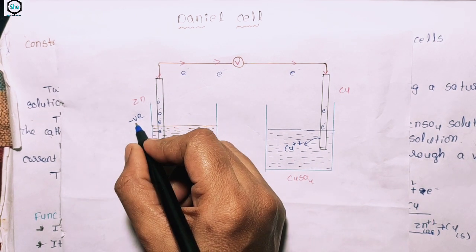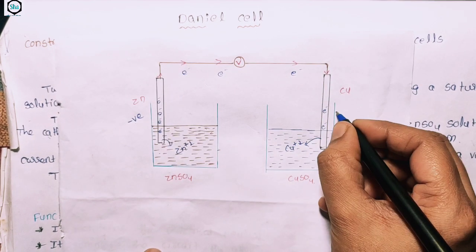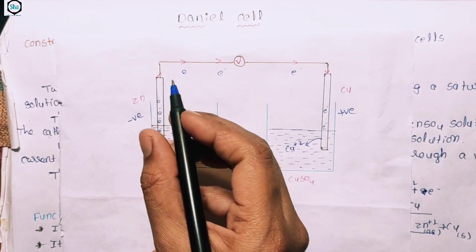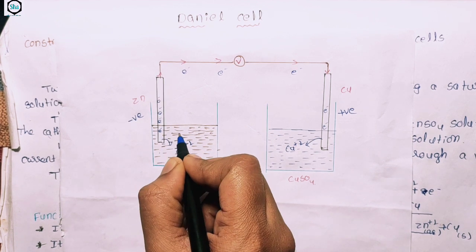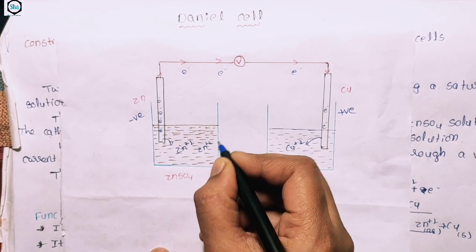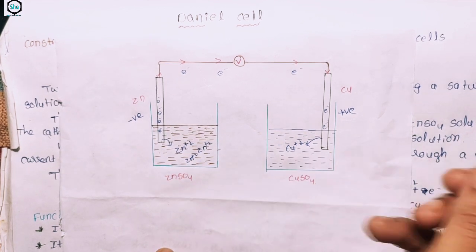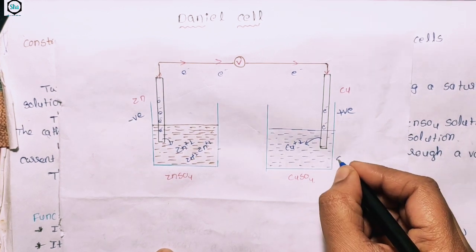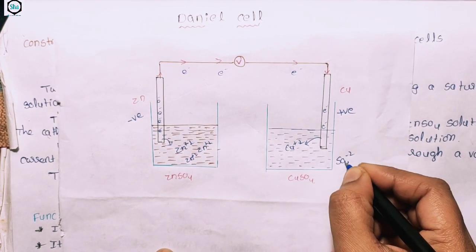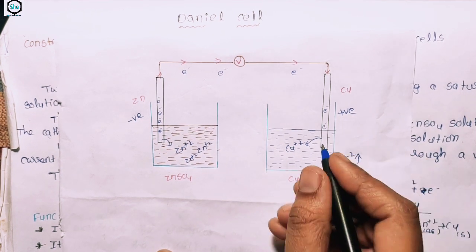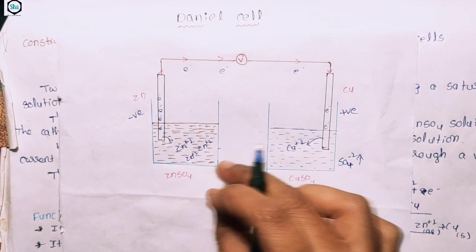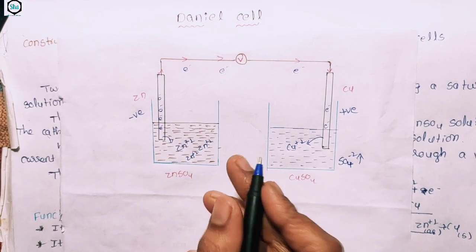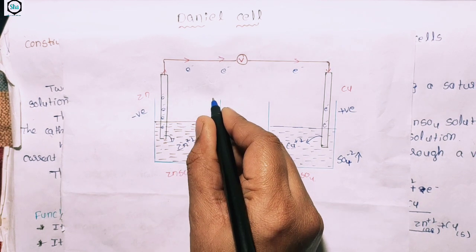The negative charge builds up at the anode side and positive charge at the cathode side. As the reaction continues, sulfate ions (SO₄²⁻) increase in the zinc half cell. If charge imbalance is not corrected, the reaction stops. Therefore, a salt bridge must be added to maintain the reaction.